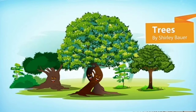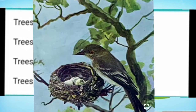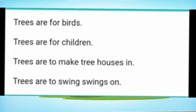Trees are for birds, trees are for children, trees are to make tree houses in, trees are to swing swings on. The poet says that trees are for birds — birds build their nests on trees and they get food and fruits from trees. So trees are for birds; birds need trees.